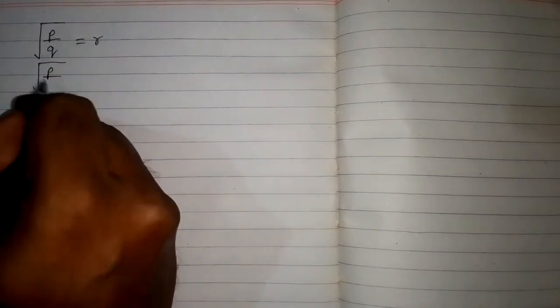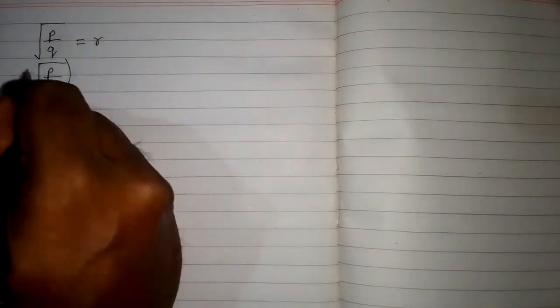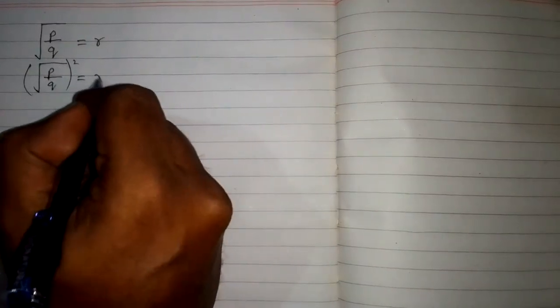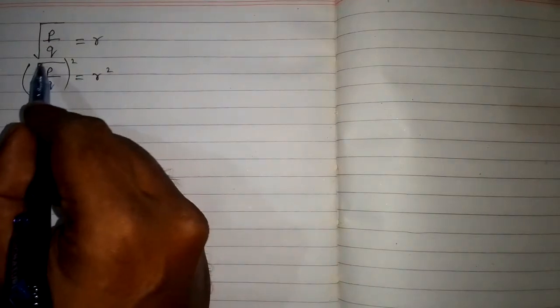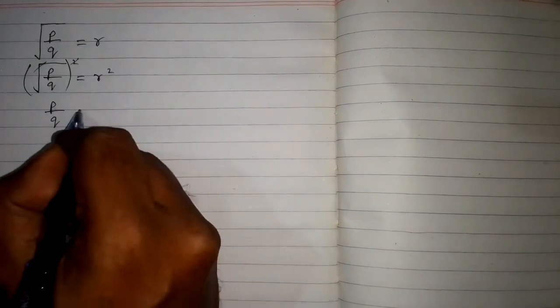First, we will square both sides. Now we can cancel the square and square root, so we have P upon Q equals R square.